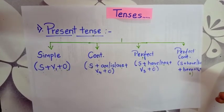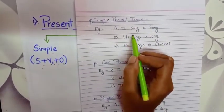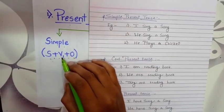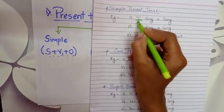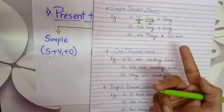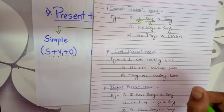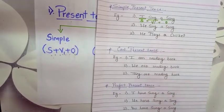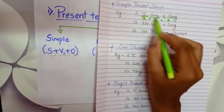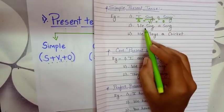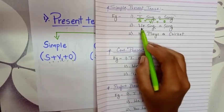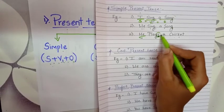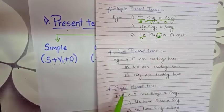Now let's move to the examples. For simple present tense, formula is S plus V1 plus object. For example: I sing a song. Here S is I, V1 is sing — V1 form — and a song is the object. So it fits S plus V1 plus object, and we can tell this is a simple present tense. Further examples: We sing a song. He plays cricket — plays is used because it is singular, so S is added to the verb. She plays cricket.